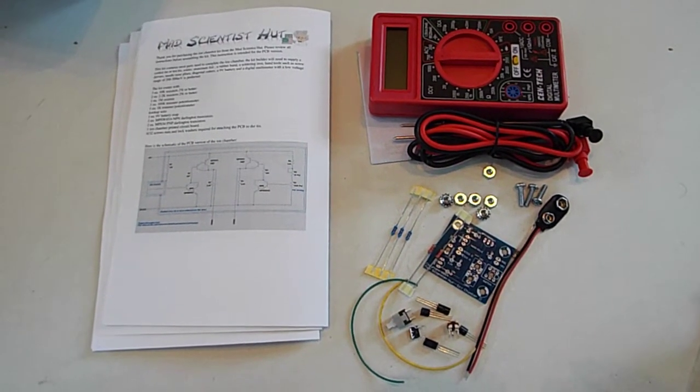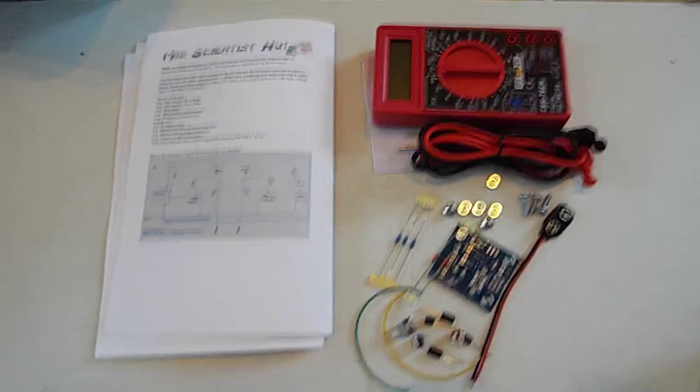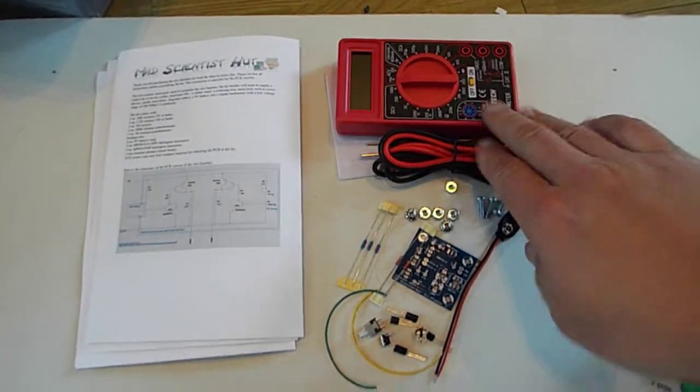In this video I'm demonstrating the Ion Chamber Kit from MadScientistHut.com. The premium kit includes a multimeter. The basic kit doesn't.